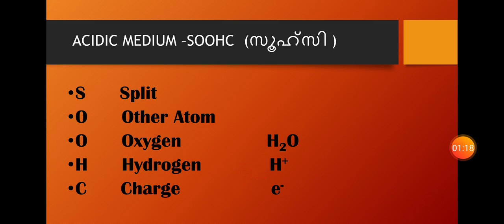For each half-reaction, we balance other atoms: oxygen, hydrogen, and charge. Oxygen should be balanced with water. Hydrogen should be balanced with H+. And charge should be balanced with electrons.